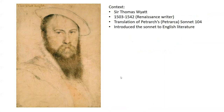He is principally known for bringing the sonnet to English literature from Italy. Around half a century after he brings these sonnets to English literature, Shakespeare begins to play with them and change them — that's how the Shakespearean sonnet is born. But this poem is a Petrarchan sonnet. It's called a Petrarchan sonnet for two reasons: it follows the form of a Petrarchan sonnet, but this is literally a sonnet written by Petrarch. Petrarch is the anglicised version of the name Petrarcha, and this poem is a translation of Petrarcha's Sonnet 104.